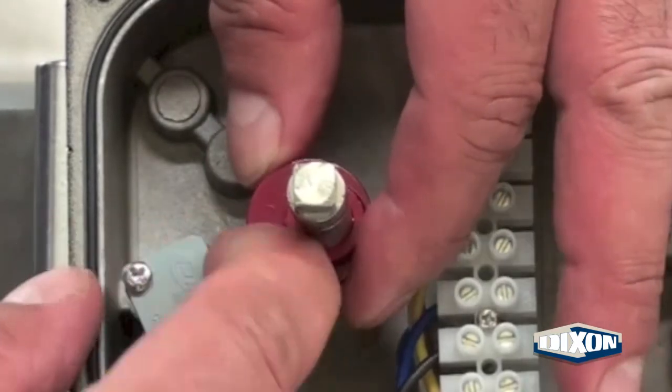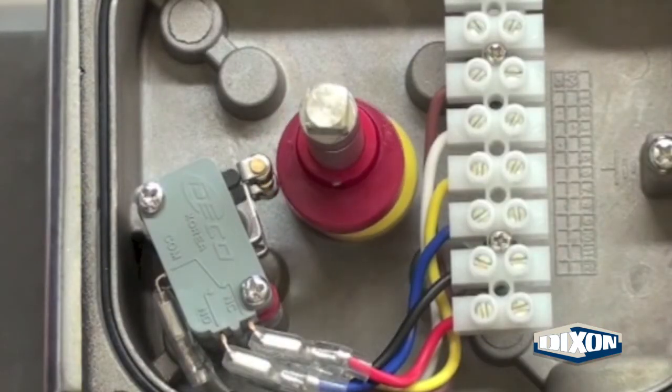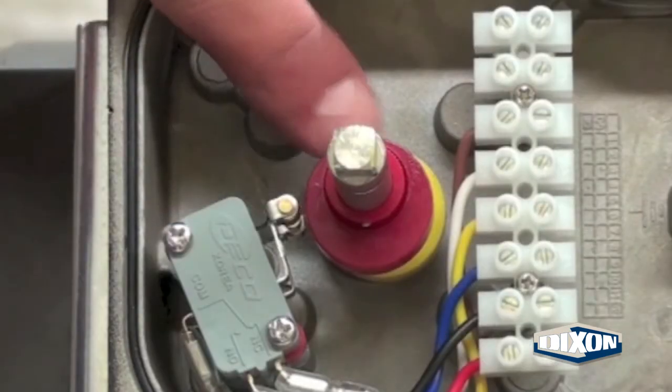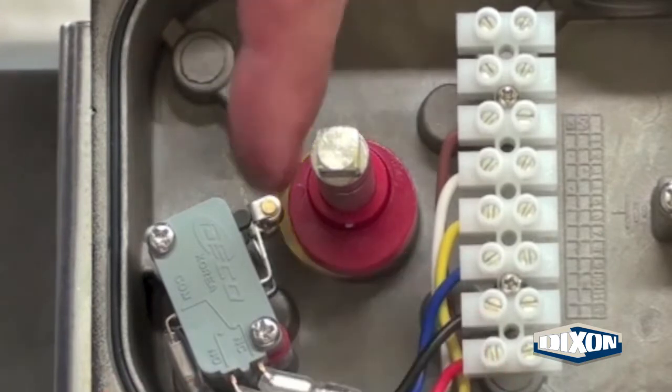When the valve is closed, the red cam should depress the upper switch. Open the valve to set the yellow open cam. To set the lower cam, lift away from the splines and rotate so that it depresses the lower micro switch.